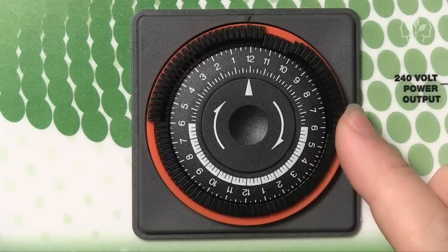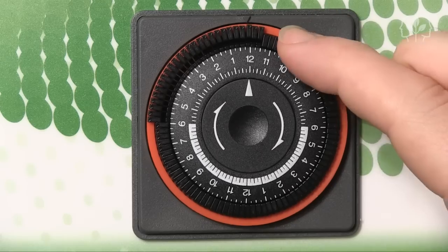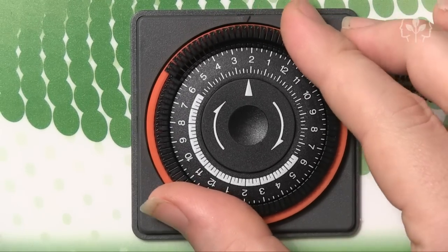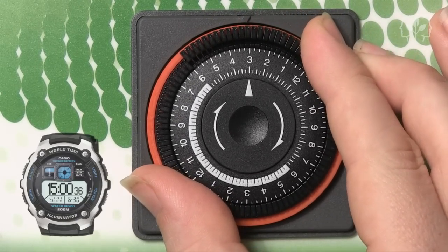Here, we're setting up an 18-6 photo period. That's 18 hours on, 6 hours off. And don't forget to turn the timer so that it's set to the current time.